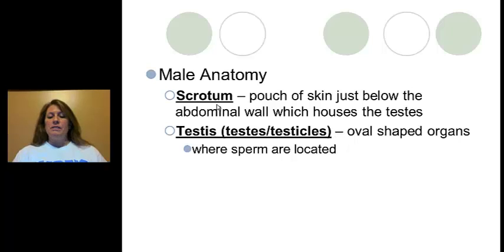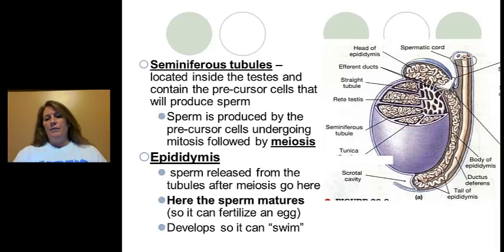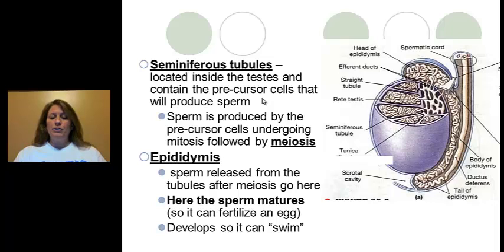The scrotum is the skin that houses or holds the testes. The testicles themselves are oval-shaped organs where the sperm are located. Inside the testicles — you can reference this diagram, you will not be asked to label it — there is a coiled structure called the seminiferous tubules, sometimes described as spaghetti or worms bound together. This is located inside the testicles and contains the precursor cells that will eventually produce sperm.